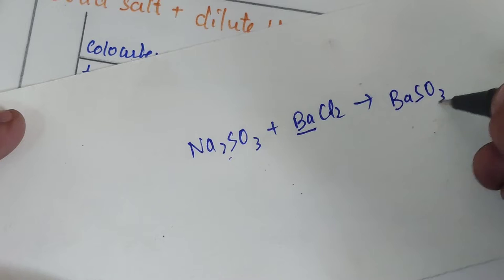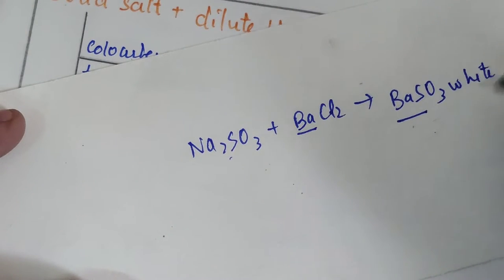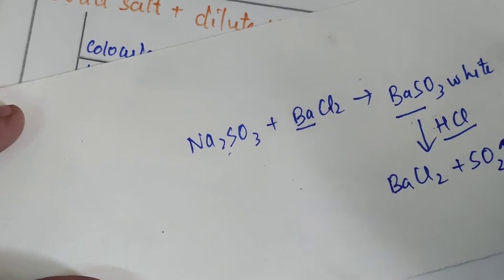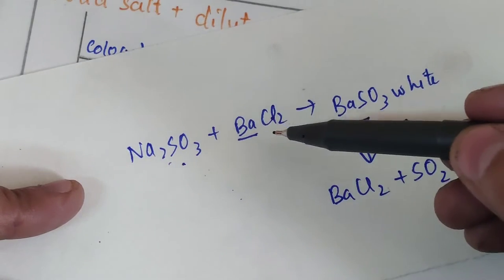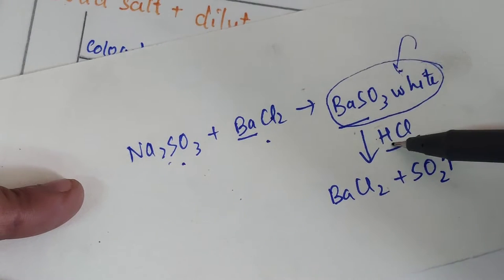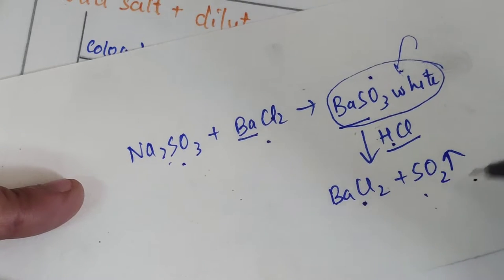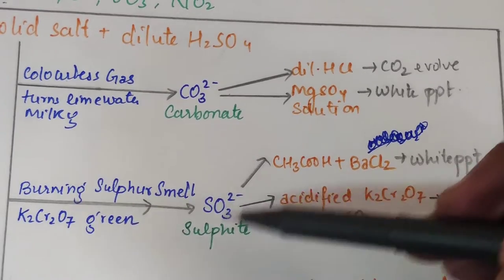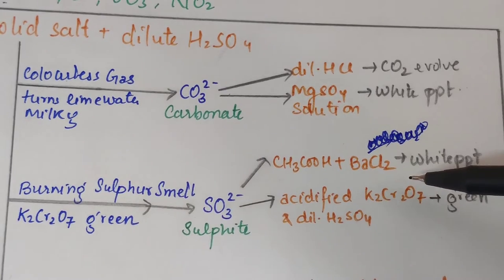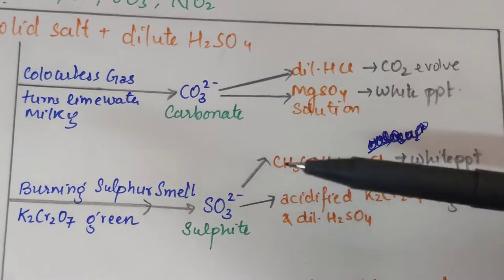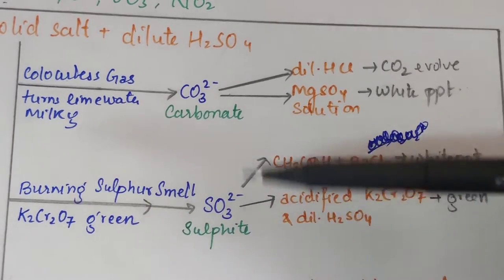This BaSO₃ white precipitate is soluble in HCl. If we add dilute HCl to the precipitate, it dissolves — BaCl₂ is formed and SO₂ gas is released. In the second confirmatory test — potassium dichromate test — add BaCl₂ to the salt solution to form BaSO₃. To this white precipitate, add acidified potassium dichromate and a green color solution is obtained. So for sulfite: first test gives white precipitate, second test gives green color solution.